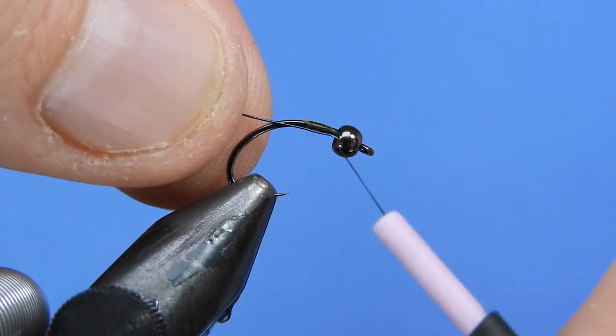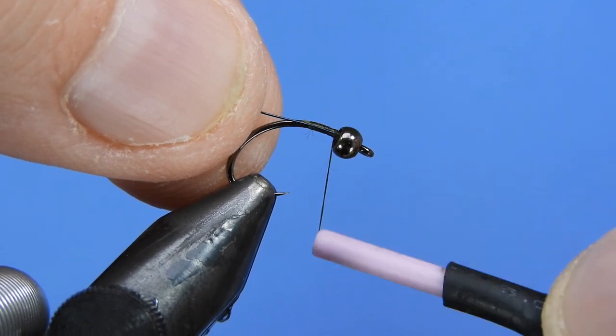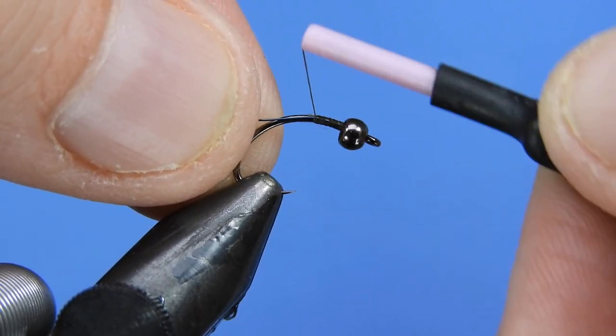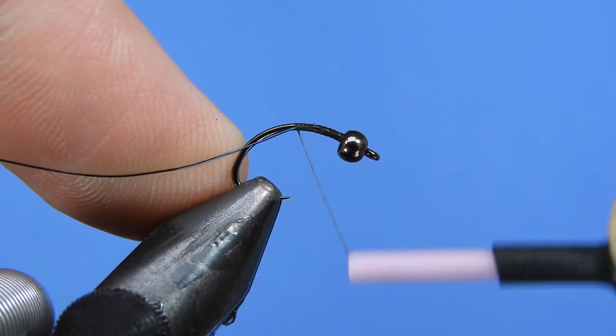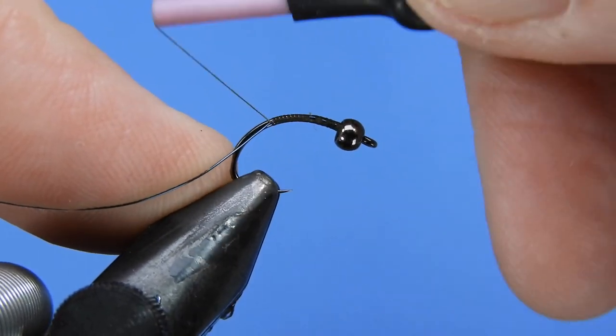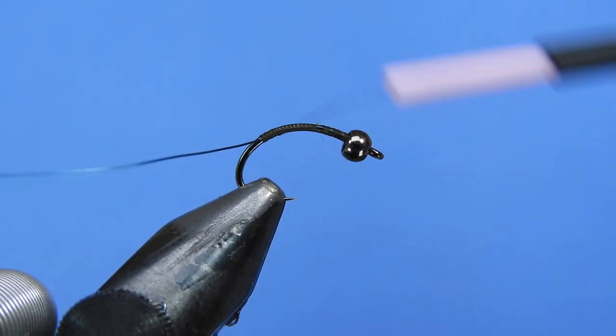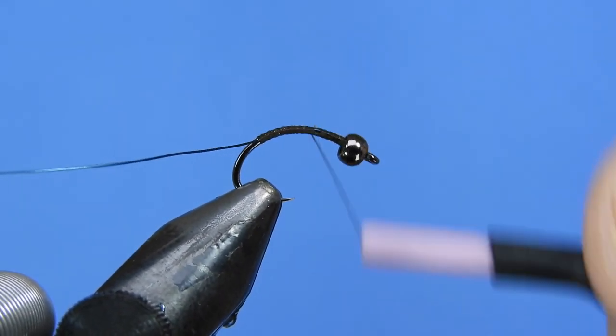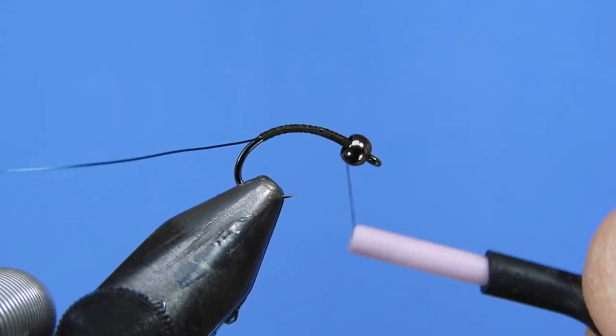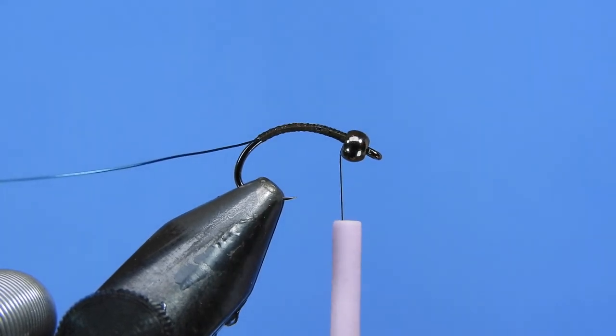And let's just tie that in. We'll just kind of push that in under the bead and then we're going to tie the wire down the hook shank. We just want to keep it positioned on the side of the hook and that helps us maintain a consistent body. If you let that wire right up to the top, you kind of get a bit of a kink in the body. We'll take our thread back up to the top.